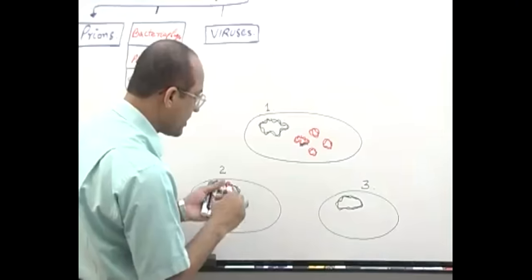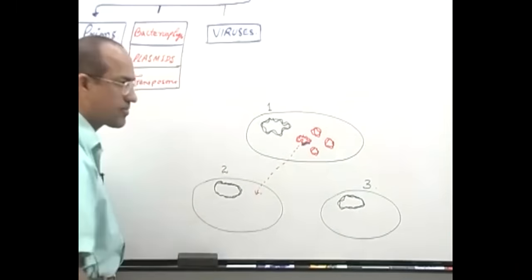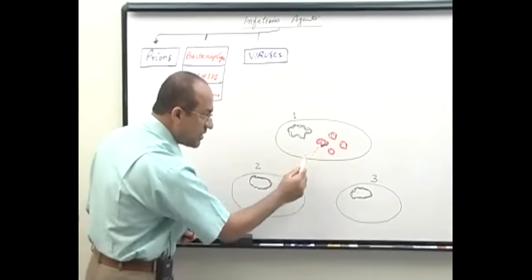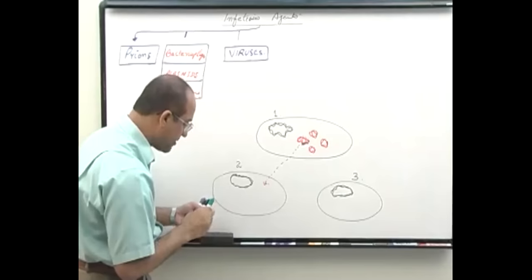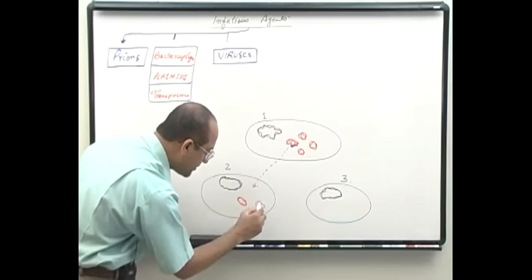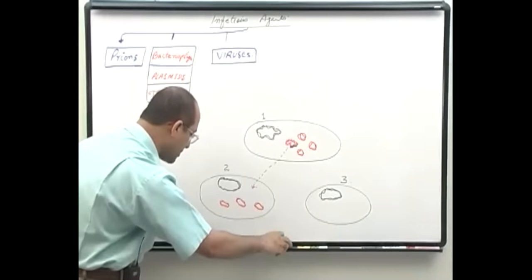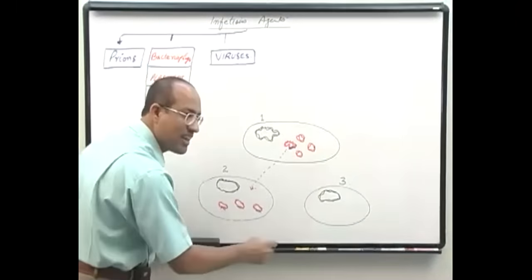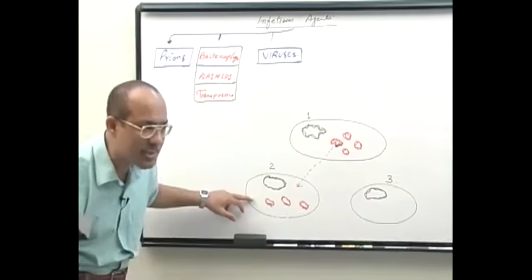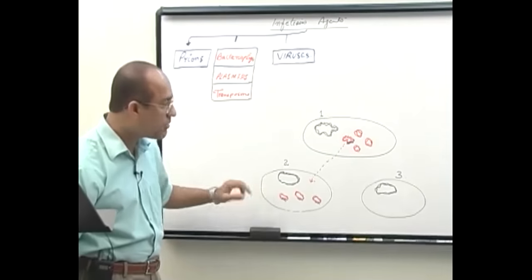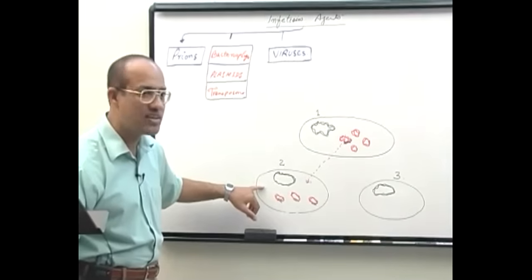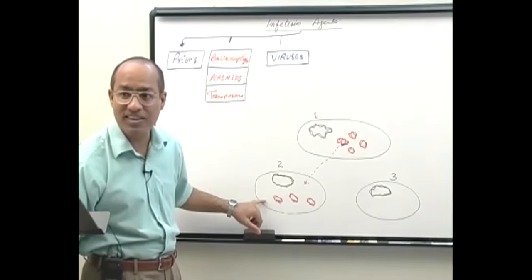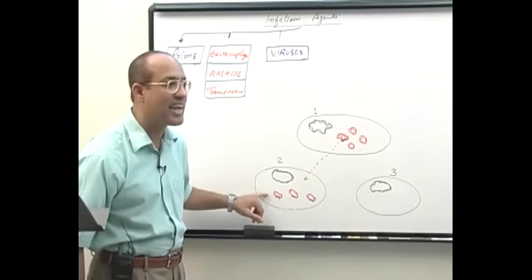If the plasmid transfers from a virulent bacterium to a non-virulent one, the receiving bacterium will start producing toxins and become virulent, producing disease. A bacterium that was part of our normal flora — innocent, producing no disease — can become highly infectious as soon as it acquires a special plasmid that allows it to express toxins.